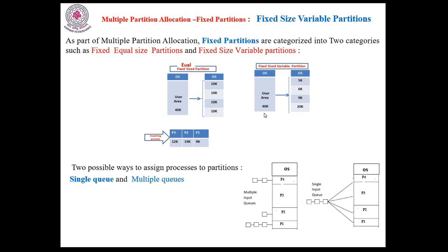Now let us look into the unequal sized partitions. P1 is 9K, P2 is 19K, and P3 is 12K. P1 can be loaded into the third partition, P2 can be loaded into the last partition, and after P2 swaps out, P3 can also be loaded. So all processes can be loaded with the help of unequal fixed sized partitions. In equal fixed sized partitions only one process could be loaded. There are certain drawbacks in equal fixed sized partitions, and even in unequal sized partitions there are certain drawbacks. But unequal sized partitions may be better than equal fixed sized partitions in certain cases, because in general program sizes may vary.